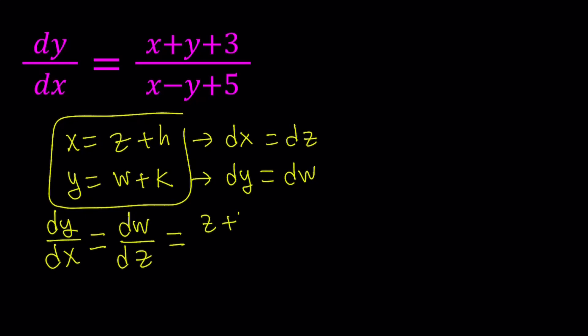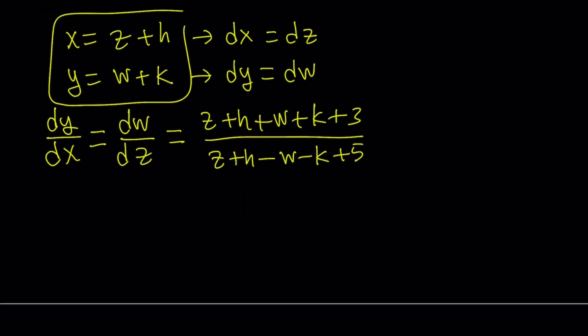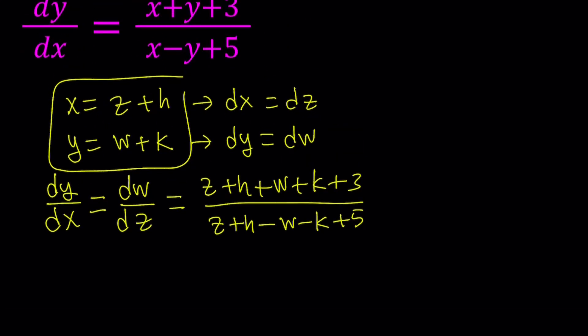And here, I can just replace x and y with these. So, let's go ahead and do it. We get z plus h plus w plus k plus 3, and then that is divided by x minus y plus 5. Now, this expression looks more complicated, but don't worry, we're going to simplify it.